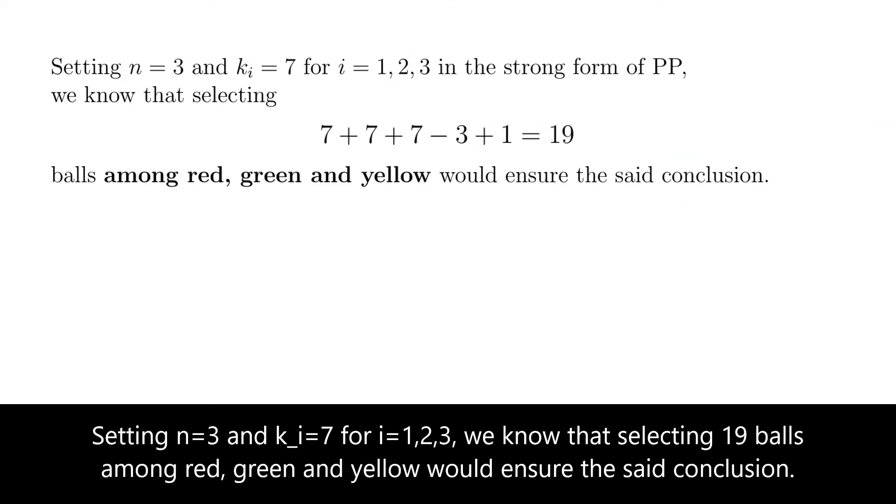Setting n equals to 3 and ki equals to 7 for i equals to 1, 2, and 3 in the strong form of pigeonhole principle, we know that selecting 19 balls among red, green, and yellow will ensure the said conclusion.